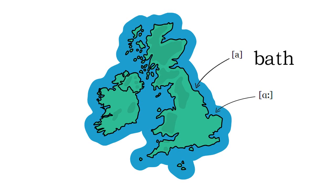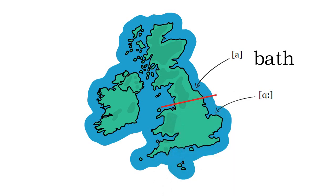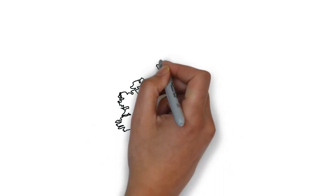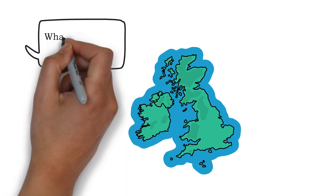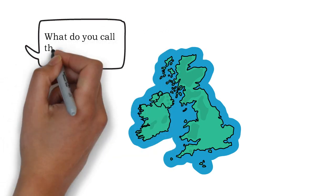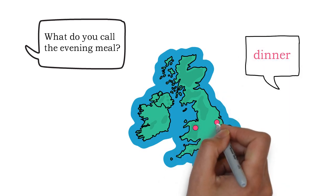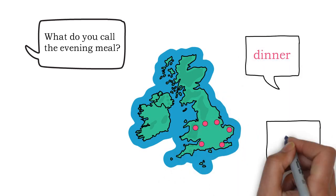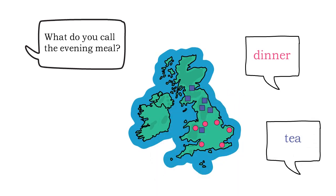The isogloss for this linguistic feature divides the region where bath becomes bath. Isoglosses are based on observations of speech. Let's imagine you asked a group of people from around the UK what they call the evening meal. Some people say it's dinner, other people call it tea. Rather than capturing every area dinner or tea is used, one isogloss for this experiment would look like this.